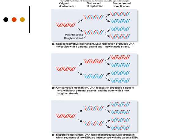The third model is the dispersive mechanism. Again, we have our original double helix in red on the left-hand side. That double helix is going to be broken up into pieces, and those pieces are going to be put together with newly synthesized pieces. We get strands that are part blue, part red, all mixed up or dispersed together to make the two new DNA strands. So we have these three different mechanisms, or models of DNA replication.